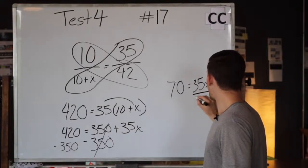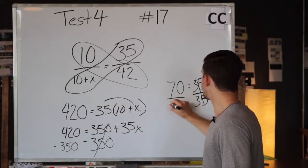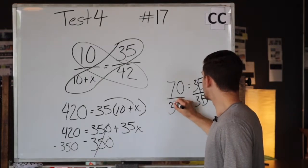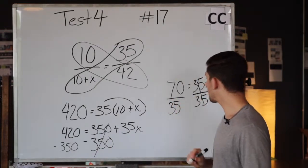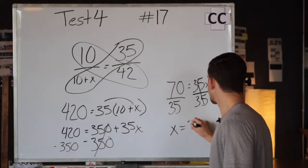To find x we're going to divide this side by 35, and if we divide this side we have to divide this side as well. That's 70 divided by 35 which will now give us x equals 2.